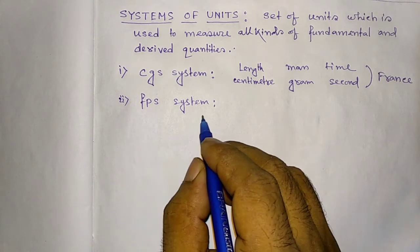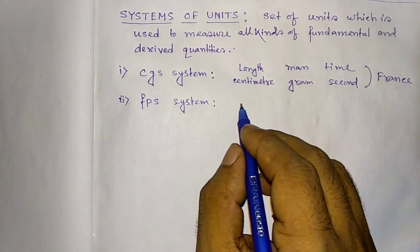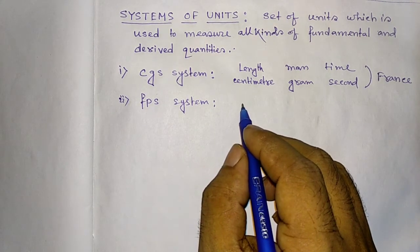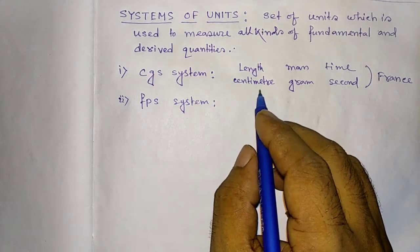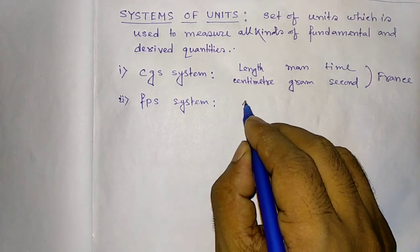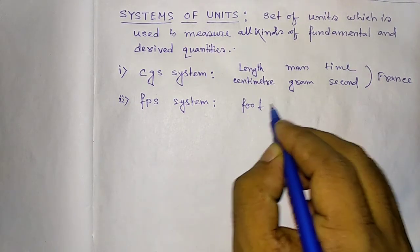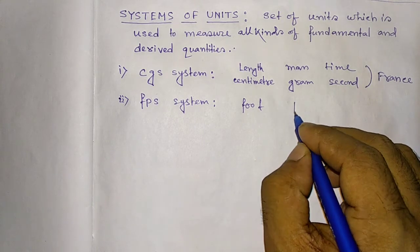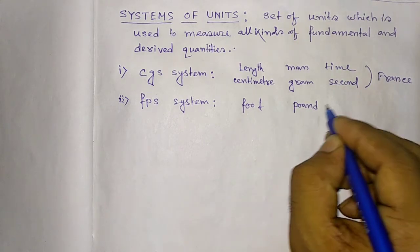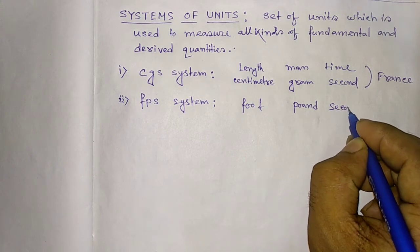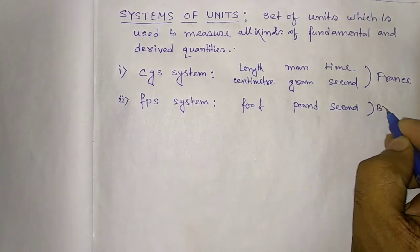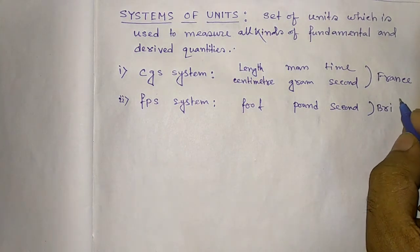FPS it is a British system. Here the unit of length is foot, mass is pound, time is second. So it is a British system of unit.